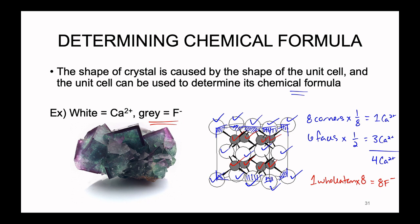Taking this counting information and dropping it into subscripts, we get calcium₄ fluoride₈. Because this is an ionic crystal, we reduce to the lowest whole-numbered ratio, and we end up with CaF₂ — calcium fluoride. This confirms that the unit cell truly is a snapshot of the larger crystal, and the chemical formula determined from the unit cell matches that determined from balancing ionic charges.